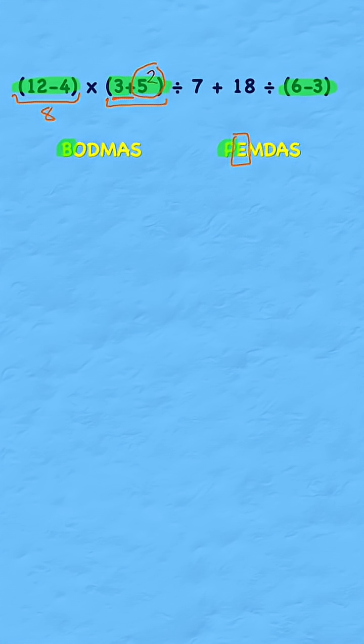So let's solve the exponent or the order first, and 5 squared is 25. Now I can do 3 plus 25, and 3 plus 25 is 28. And the last bracket is 6 minus 3, which is 3.